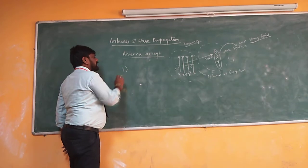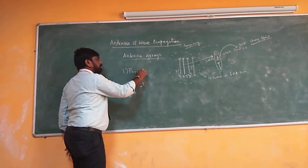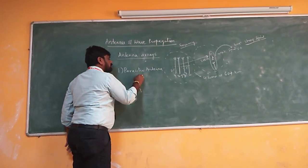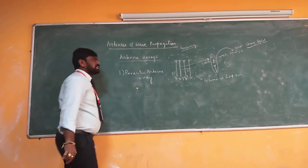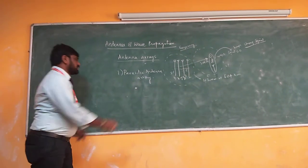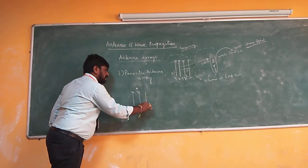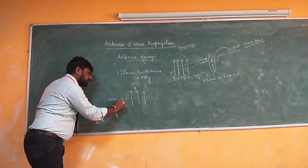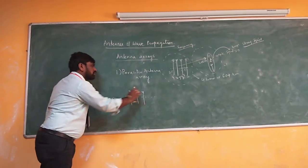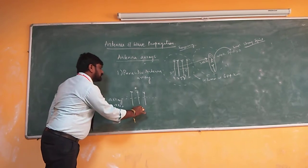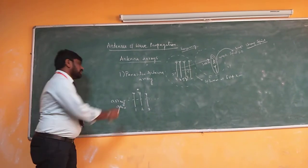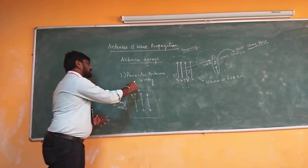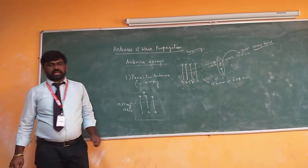Antenna arrays are of many types. The first basic antenna array is called the parasitic antenna array. In a parasitic antenna array, for example, I have 3 antennas arranged along an array axis — the axis passes through the centers of all the antennas. Antennas 1, 2, and 3 together form a single system called a parasitic antenna array.